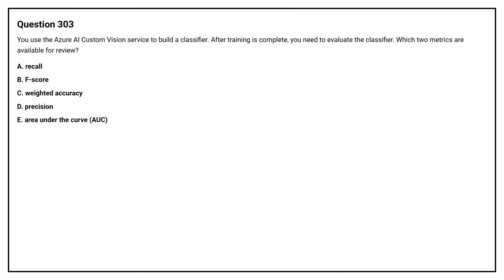Option A: Recall. Option B: F-score. Option C: Weighted accuracy. Option D: Precision. Option E: Area under the curve (AUC).